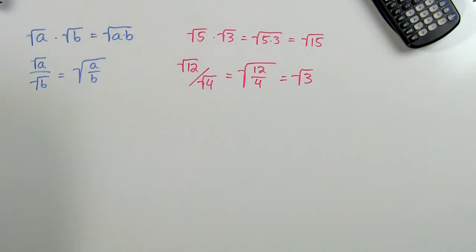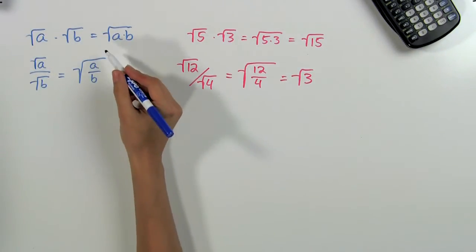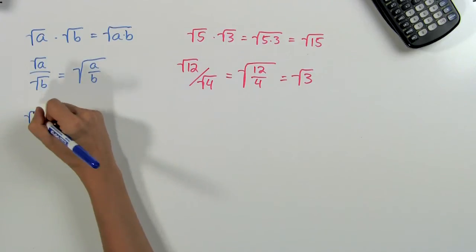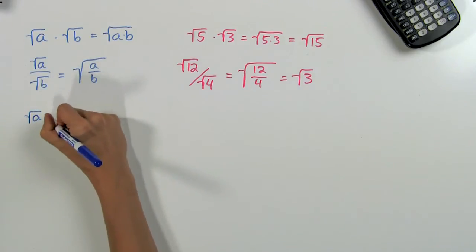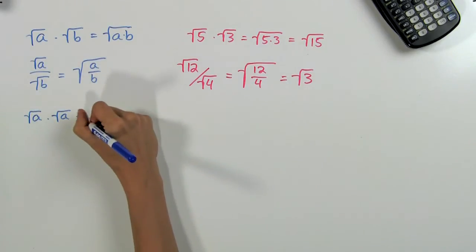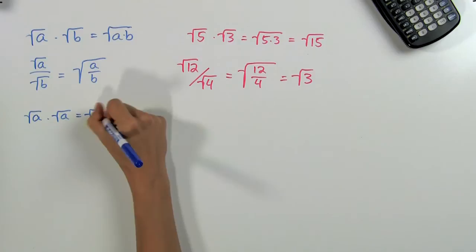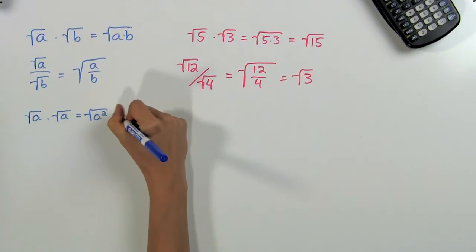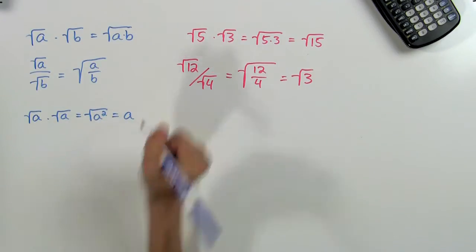There's one more rule that's good to remember and it comes from the first one. It says that the square root of a times the square root of a is equal to the square root of a squared, and that's just a.